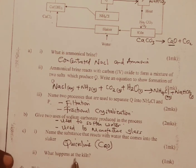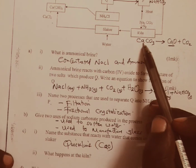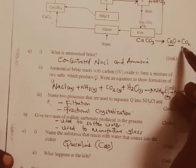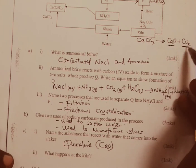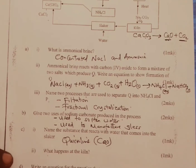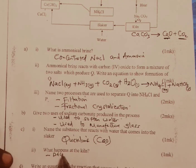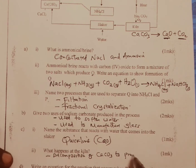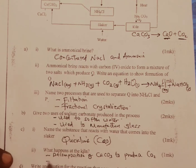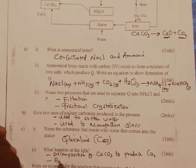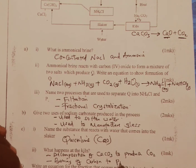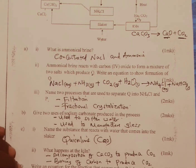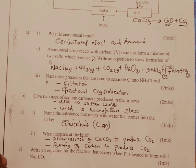What happens at the kiln? This is where calcium carbonate is decomposed to produce carbon dioxide and calcium oxide — our main interest is to get carbon dioxide. So: number one, decomposition of calcium carbonate to produce carbon dioxide; and number two, burning of carbon (coke) to produce carbon dioxide, which is one of the raw materials in the industrial manufacture of sodium carbonate.